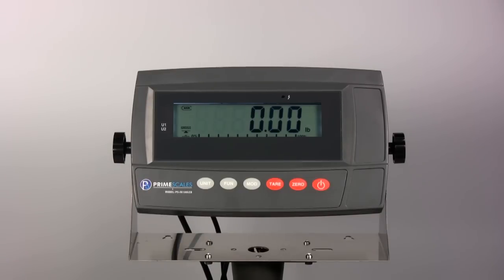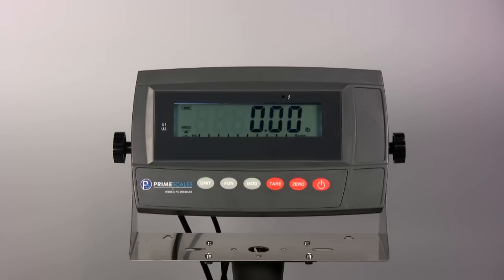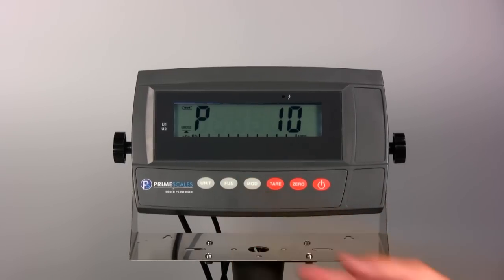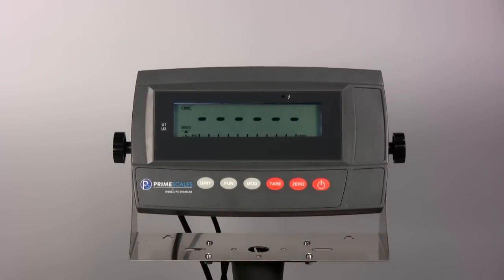Here I will show you all these functions one by one. Counting function: In counting function mode, place a certain amount of items on the scale. The amount should match the number on the screen. You have choices of 10, 20, 50, 100, and 200. Press the FUN key and the scale is ready to count.